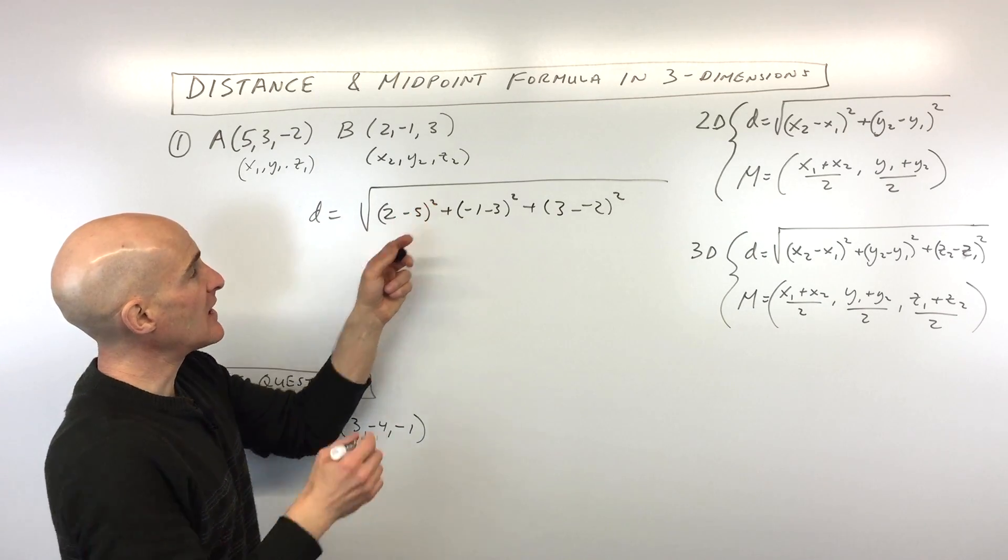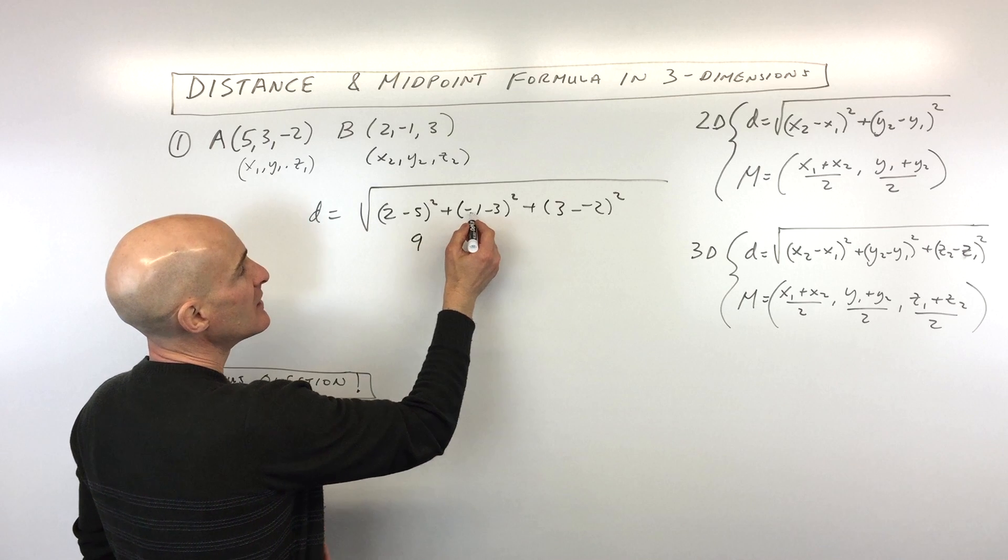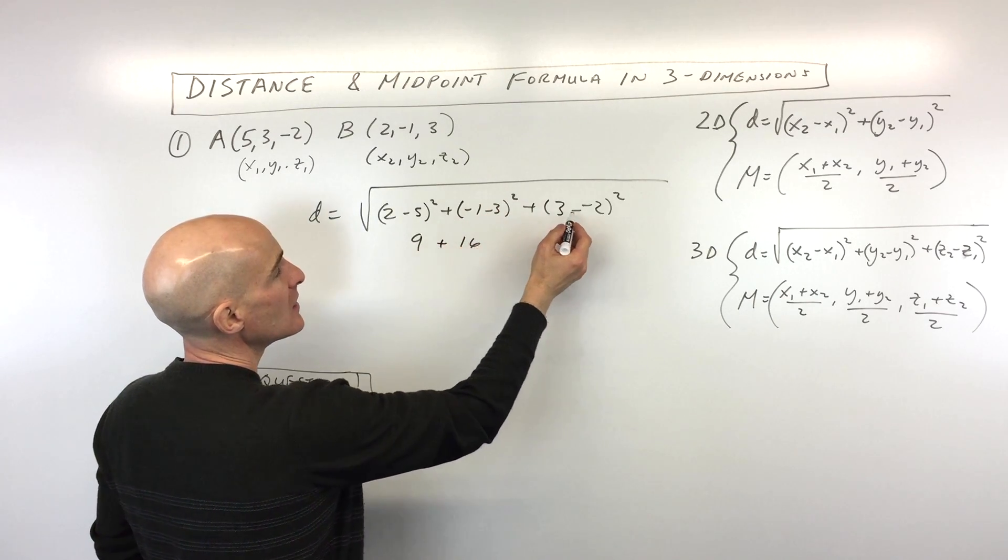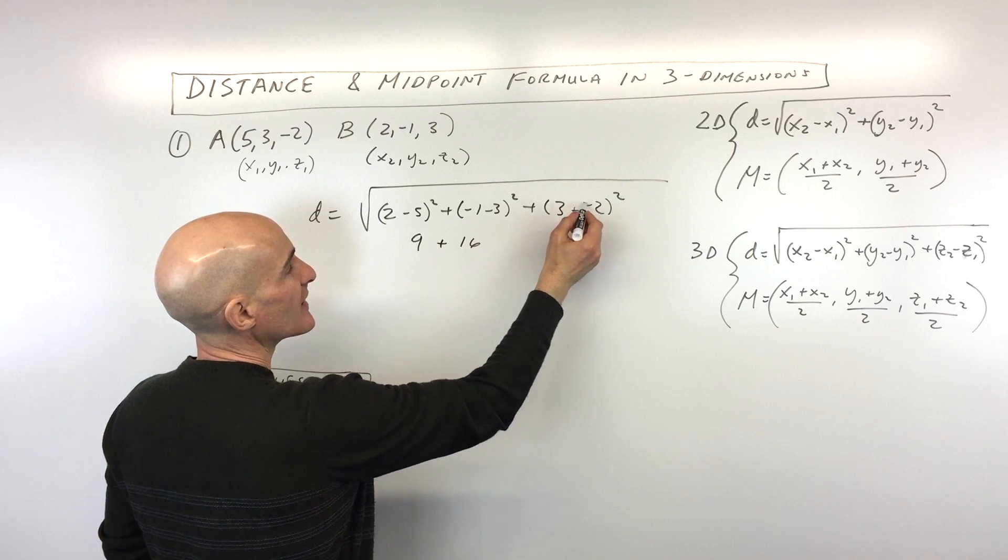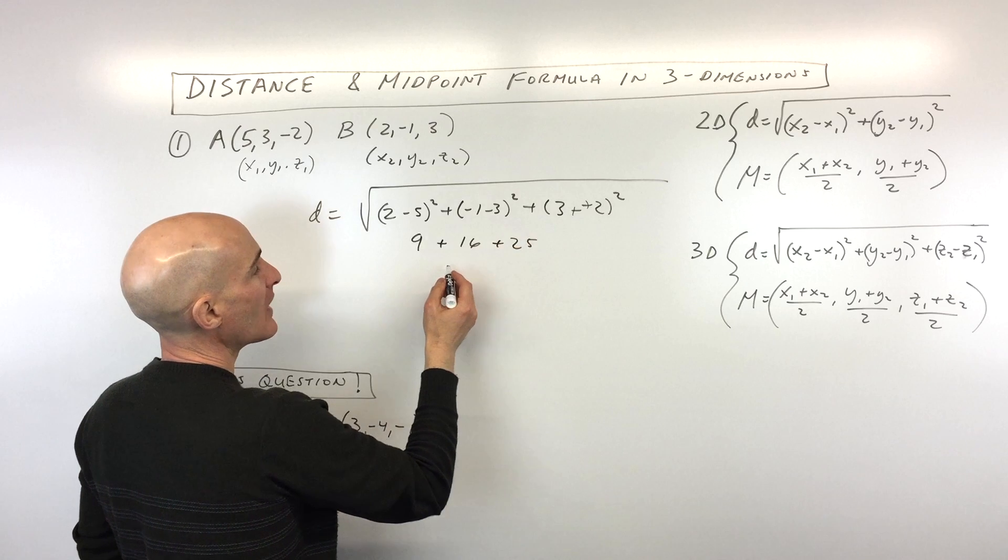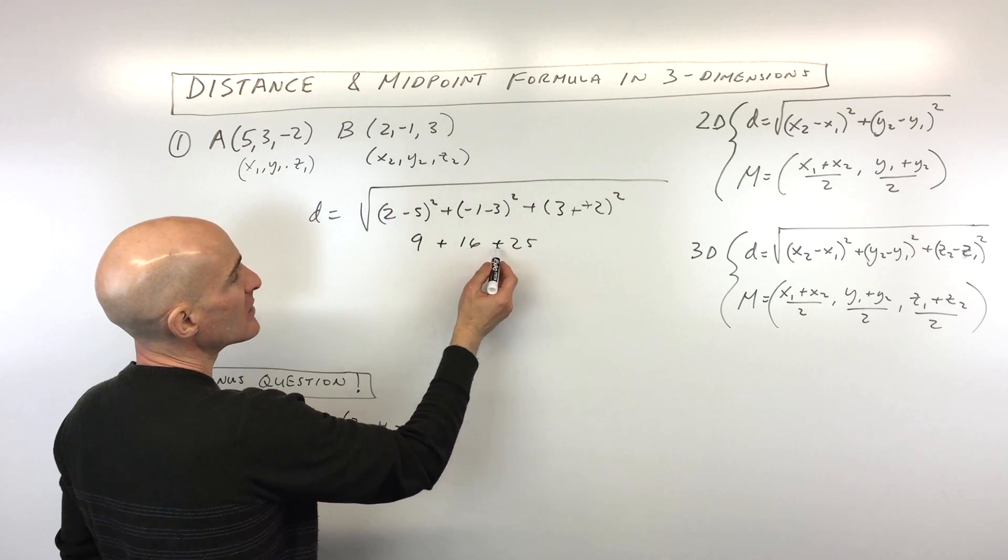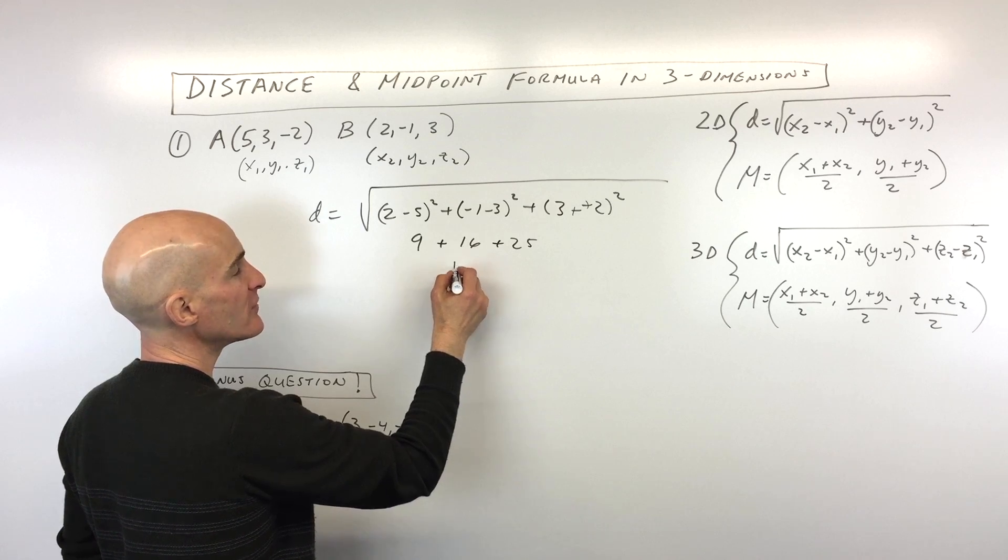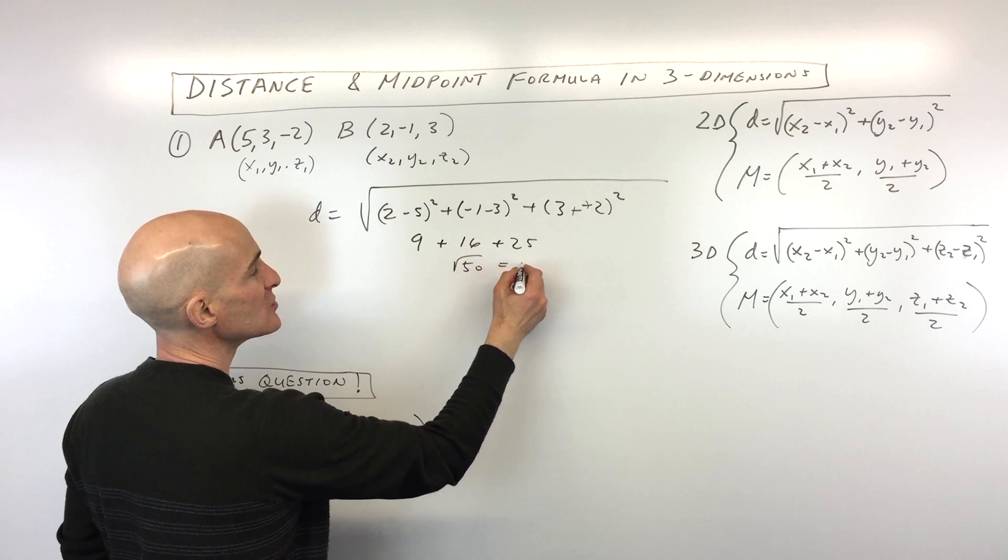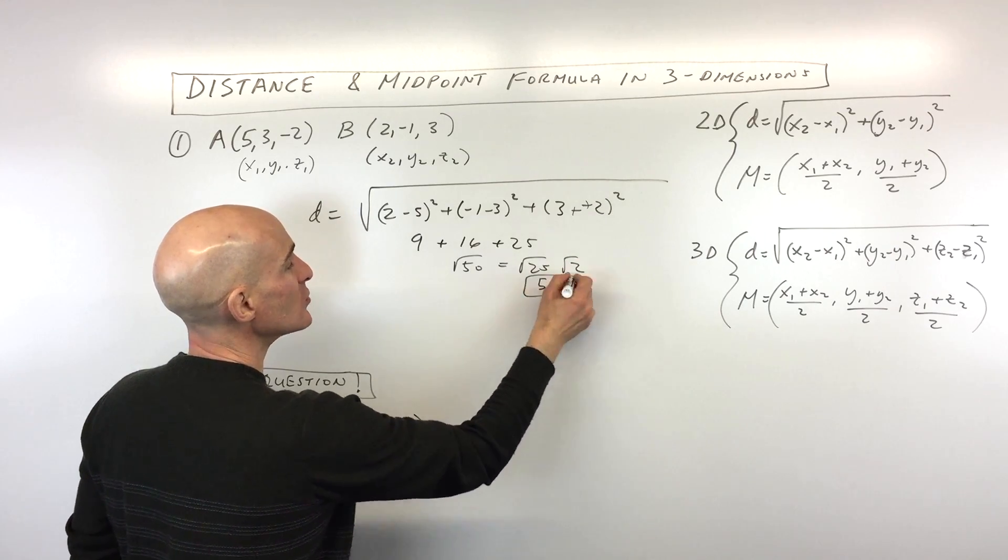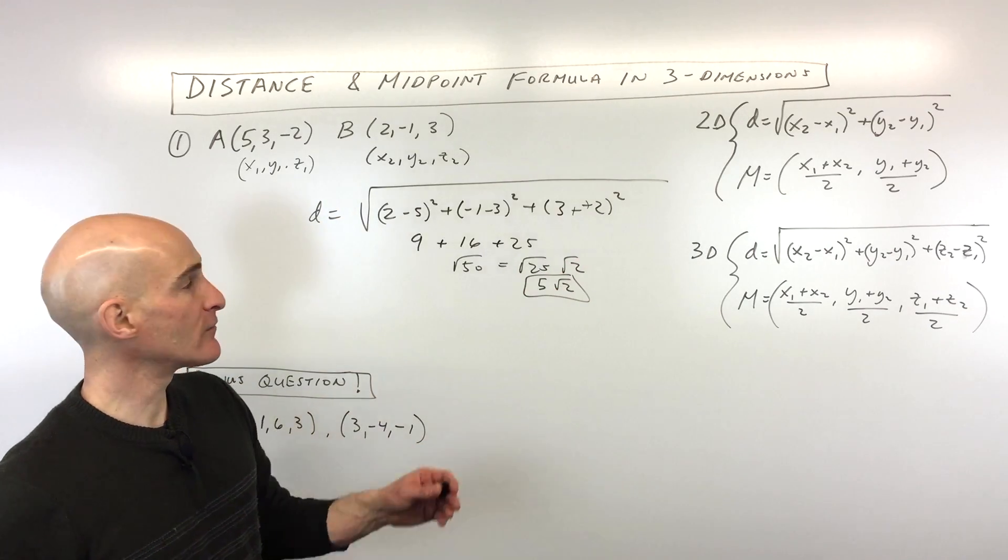Two minus five is negative three. Negative three squared is nine. Negative one minus three is negative four. Negative four squared is positive 16. Three minus negative two is really like adding a positive two. That's five squared, which is 25. If we add those together, that's 41 plus nine is 50. So the square root of 50. We can simplify that into 25 times 2, or 5√2. That would be an exact answer for the distance.